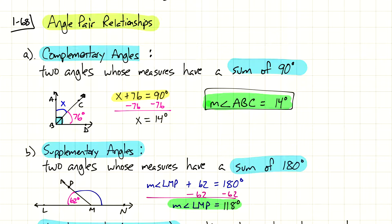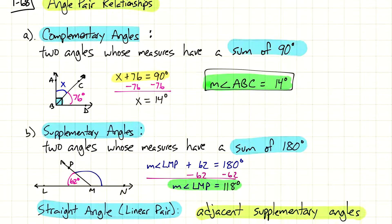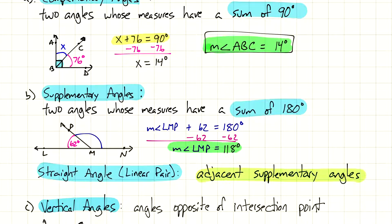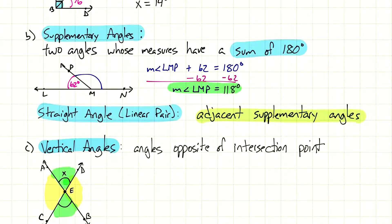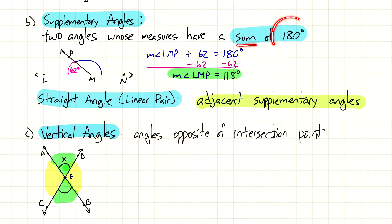The same thing applies to supplementary angles. Supplementary angles are two angles whose measures have a sum of 180 degrees. So these are not adding up to 90 anymore — they're adding up to 180. It's twice as big.